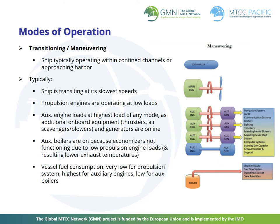Transitioning or maneuvering mode: the ship is typically operating within confined channels or approaching the harbour, transiting at its slower speeds. Propulsion engines are operating at low loads. Auxiliary engine loads are at the highest load of any mode, as additional onboard equipment such as thrusters, air scavengers, blowers and generators are on line. Auxiliary boilers are on because economizers are not functioning due to low propulsion engine loads and the resulting low exhaust temperatures. Vessel fuel consumption is very low for the propulsion system, highest for the auxiliary engines, and low for auxiliary boilers.